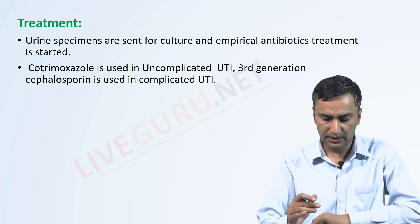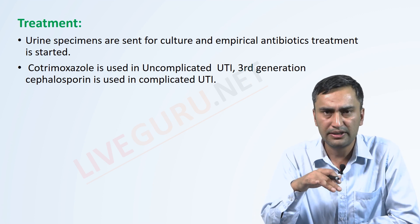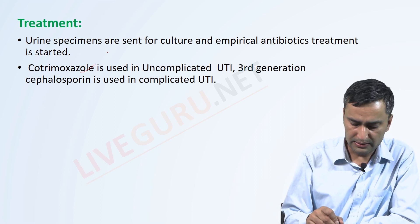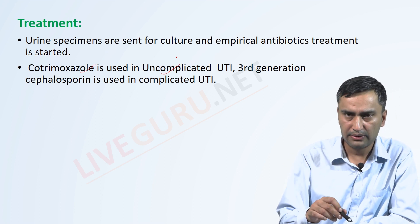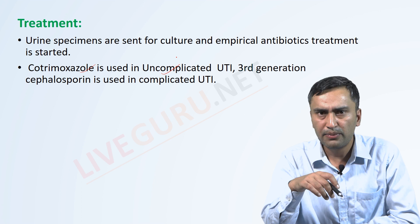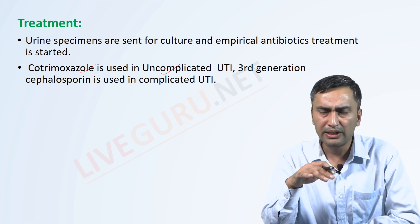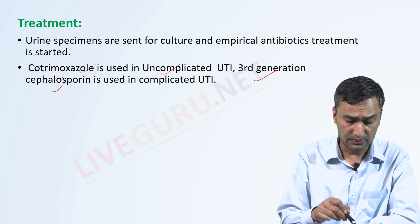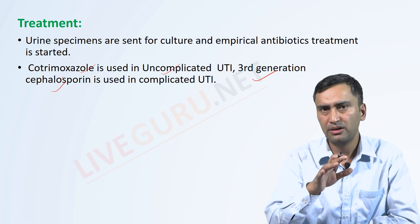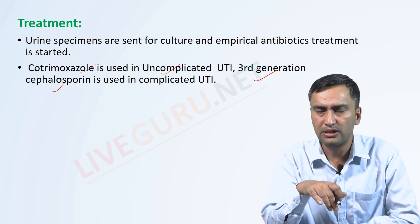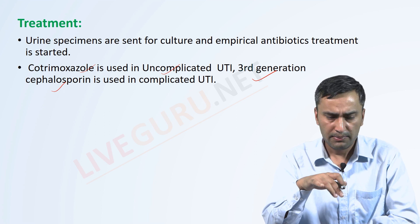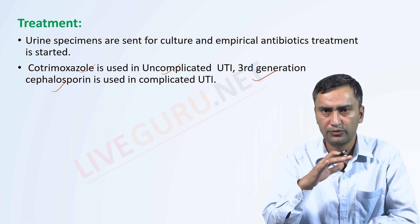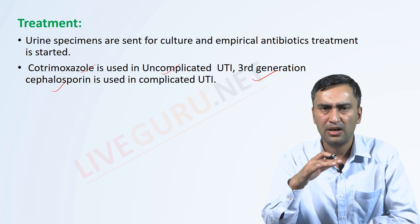For treatment, antibiotics are the definitive treatment for UTI. Uncomplicated cases can be treated accordingly, but in complicated UTI, the first choice of treatment needs to be selected. This completes two parts of the renal system discussion.